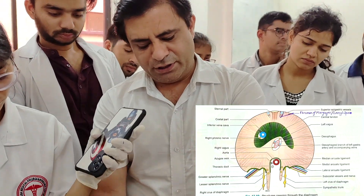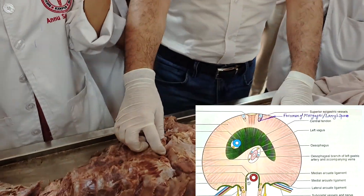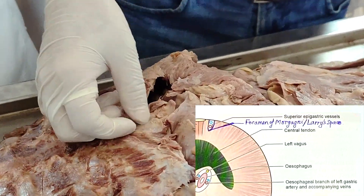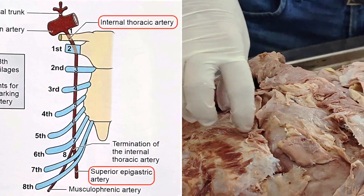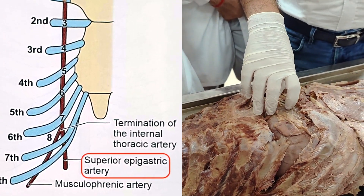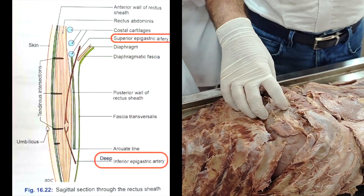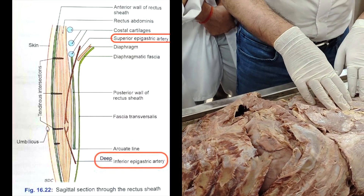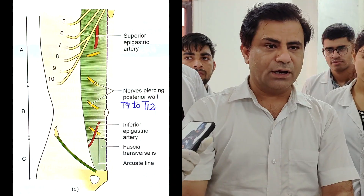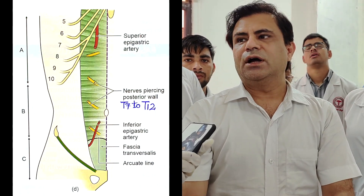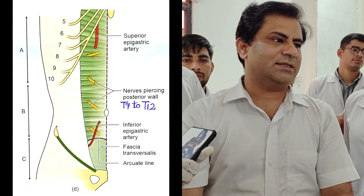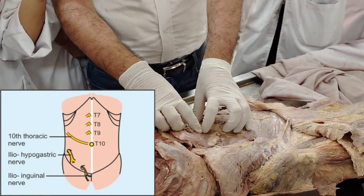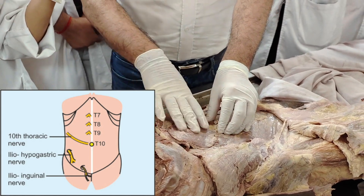There is also the space of Retzius, and the foramen of Morgagni behind the xiphisternum on both sides. The internal thoracic artery continues as the superior epigastric artery, which enters the rectus sheath by piercing its posterior wall. Both vessels reach to the umbilicus. The nerve supply of rectus abdominis is the lower six thoracic nerves. T10 supplies the umbilicus and the skin overlying it.